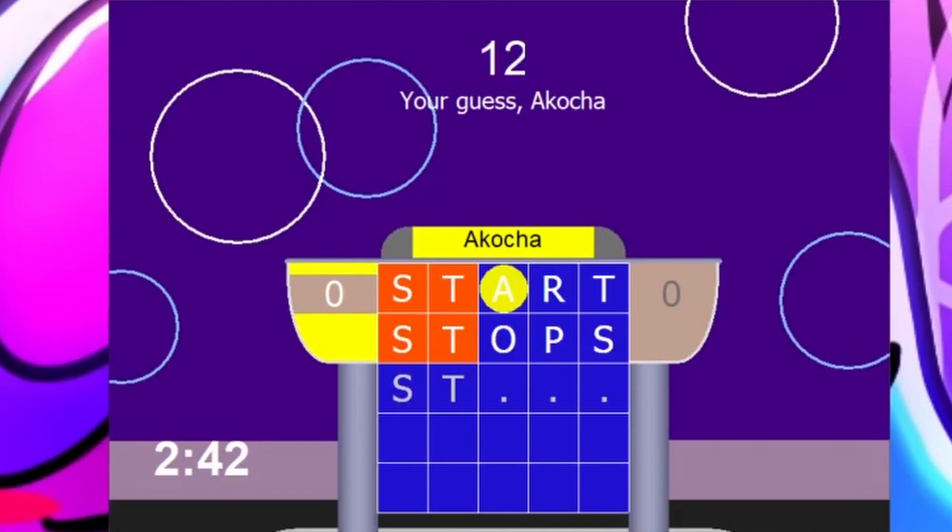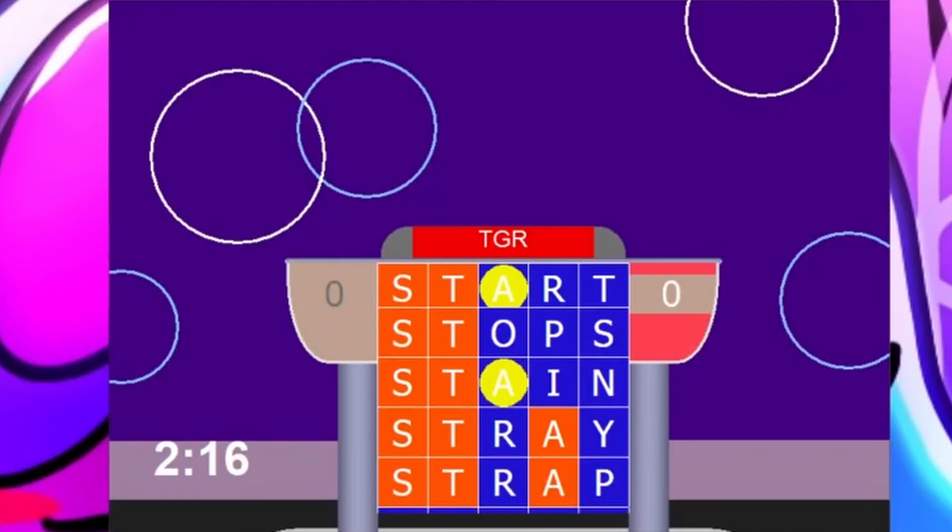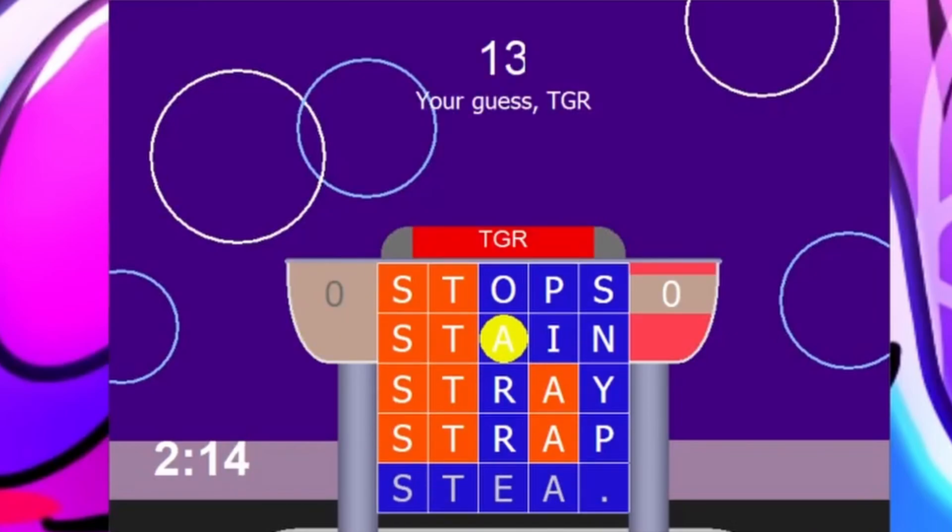No help there. How about Stain, S-T-A-I-N. How about Stray, S-T-R-A-Y. That might be it. Oh no. One more guess. How about Strap, S-T-R-A-P. No, TGR, bonus letter coming up. E. Steam, S-T-E-A-M. I think that's it. He got it. No, it's not.